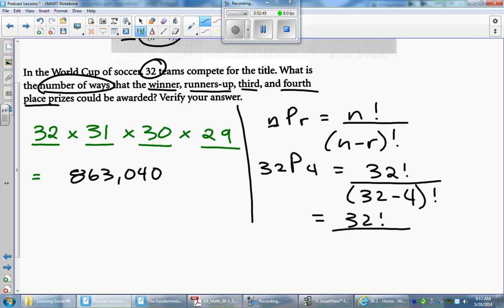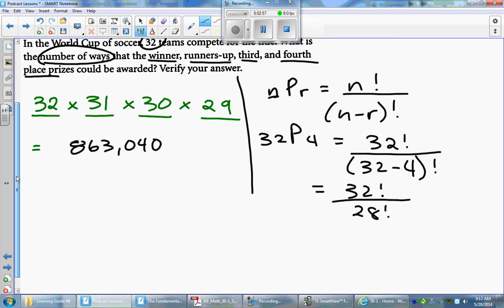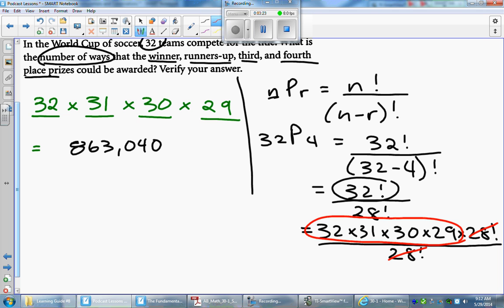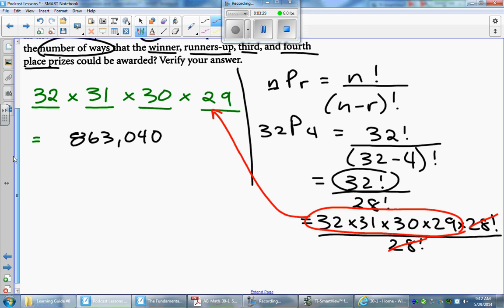All right, so we can simplify this before we stick anything in our calculator. 32 factorial over 32 minus 4 factorial - that actually is the same thing as 28 factorial. So once again, you could just stick this in your calculator, but you can also simplify this. You can simplify the bigger expression here. Remember, a factorial is just a descending number of sequences. So 32 times 31 times 30 times 29 times 28. I'm actually going to stop there because now I can cancel out the 28 factorial on the bottom. And what you're going to notice here is we're actually left with 32 times 31 times 30 times 29. And that actually is the same exact expression we got when we used the fundamental counting principle.